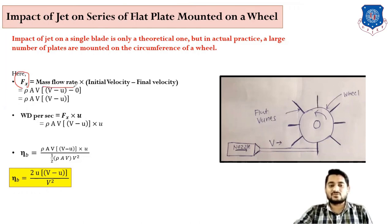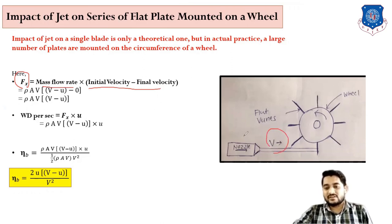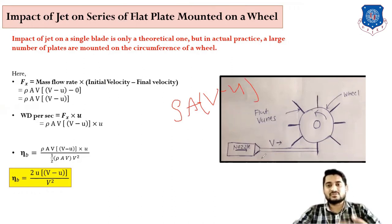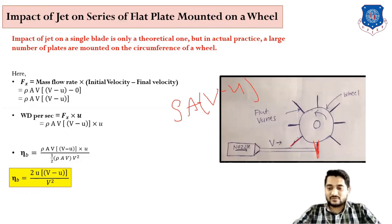For force, as usual: force equals mass flow rate into change in velocity. Mass flow rate is ρAV. Now the question arises: since this is a moving plate, why are we not taking ρA(V−U)? Because there are so many vanes — suppose 60% of the fluid impacts on one blade, the remaining 40% will impact on the next blade, so no fluid is wasted. Therefore we take the full mass flow rate as ρAV.